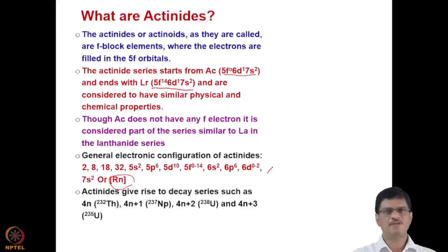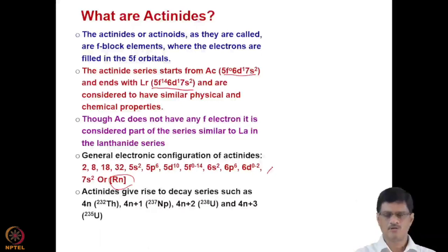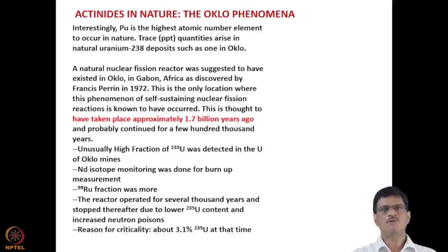Actinides give rise to decay series: the 4N series (thorium-232), the 4N+1 series (neptunium-237), the 4N+2 series (uranium-238), and the 4N+3 series (uranium-235) — which you have likely already studied in school.